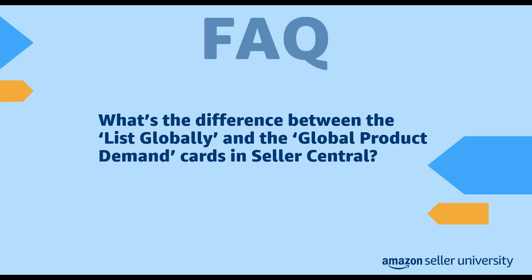Let's go over some common questions we received. The first question is: what is the difference between the List Globally and Global Product Demand cards in Seller Central? The global product demand card is the entry point for Amazon's marketplace product guidance global demand for your products recommendations, shown to all professional sellers who have active demand for their ASINs in the international marketplace. The list globally card is shown to all sellers and guides them to the Build International Listings page, which can be used by sellers who have already registered and linked their account with an international store to syndicate offers from the US store.